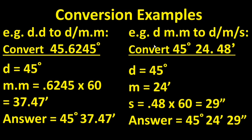To convert decimal minutes into degrees, minutes, seconds: the degree remains the same, the minute remains the same, and the seconds are calculated by taking the decimal portion of the minute and multiplying by 60. For example, converting 45 degrees, 25.48 minutes to degrees, minutes, and seconds: the degree remains 45, the minute remains 24, and the seconds are calculated by multiplying the decimal portion .48 times 60, which gives 29 seconds. The answer is 45 degrees, 24 minutes, 29 seconds.